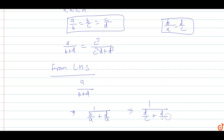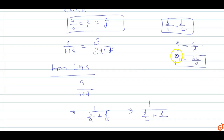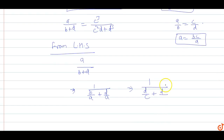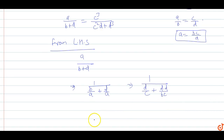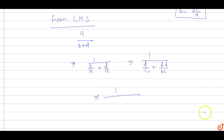Now, D by A: since A by B equals C by D, we get A equal to BC by D. So substituting this A, the expression becomes 1 upon D by C plus D squared by BC.